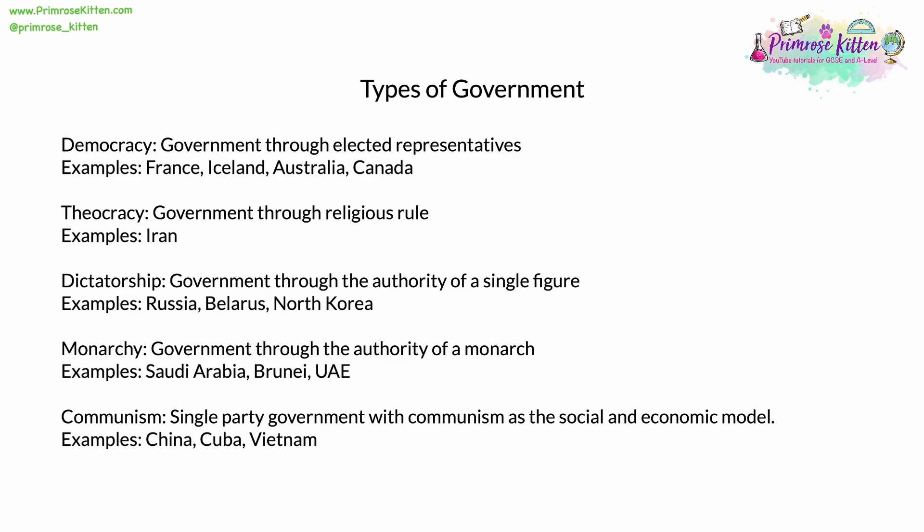Communism is a type of government familiar through most of the 20th century. The Cold War from 1945 through to about 1990 was dominated by the struggle between communism and capitalism and democracy. Communism is a single-party style of government with communism as the social and economic model. There are few communist countries left in the world — China, Cuba and Vietnam are the most prominent examples — however even in these cases they have reformed communism to an extent to allow elements of democracy or capitalism.